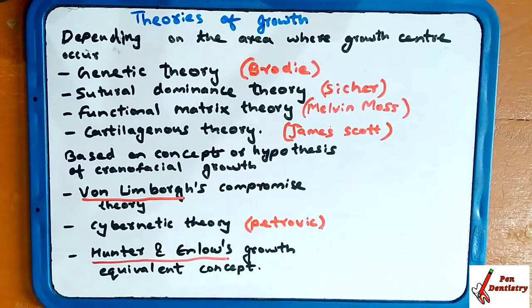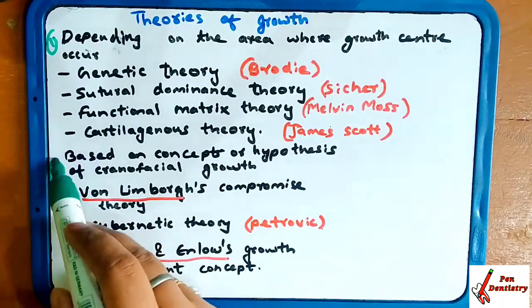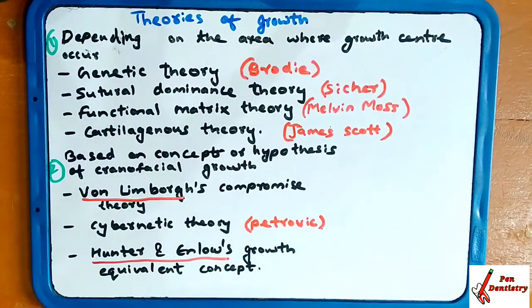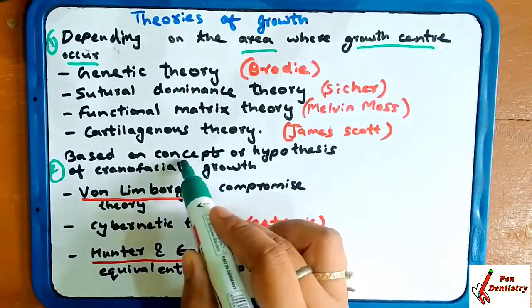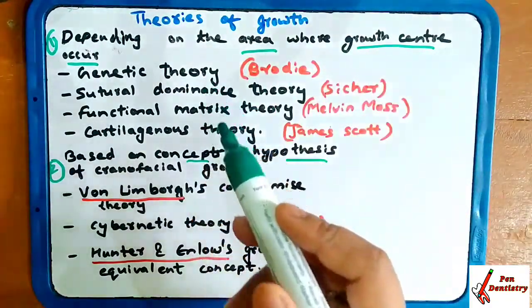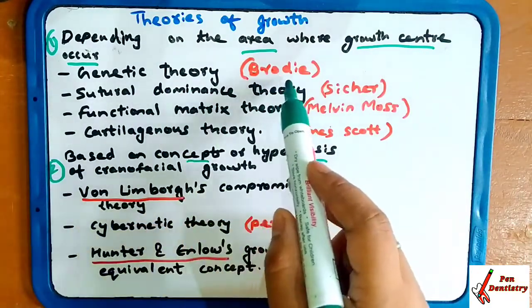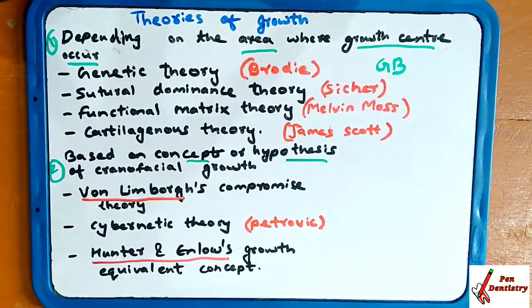Many of the scientists have given theories on growth, and today we are going to learn some of them. The theories of growth are divided into two parts. The first one is depending upon the area where the growth center occurs. The first theory in this category is genetic theory, given by Brody — remember it as GB, genetic theory by Brody.